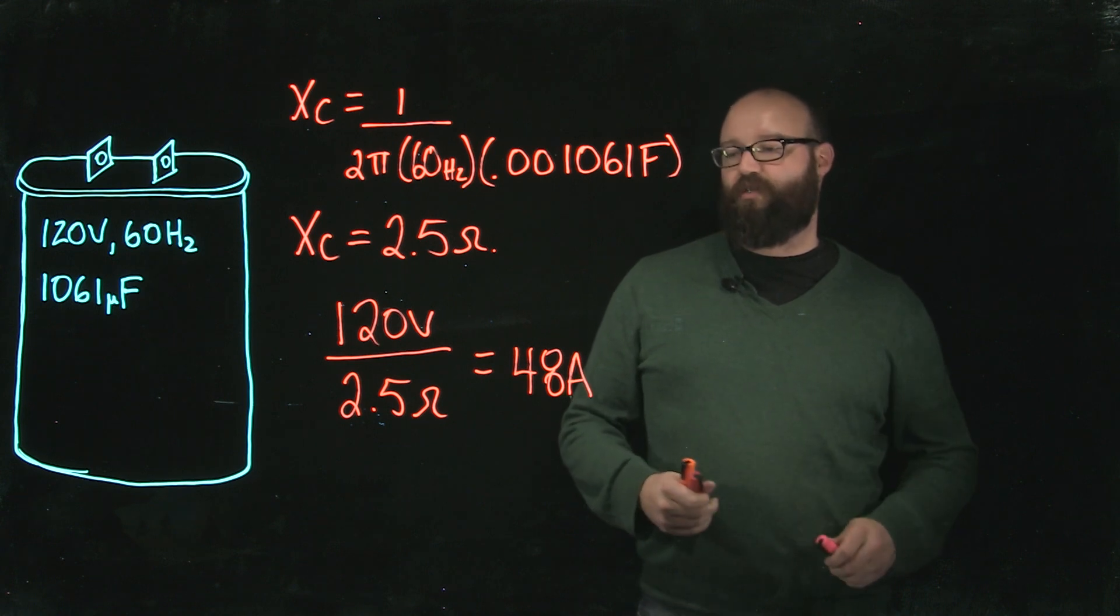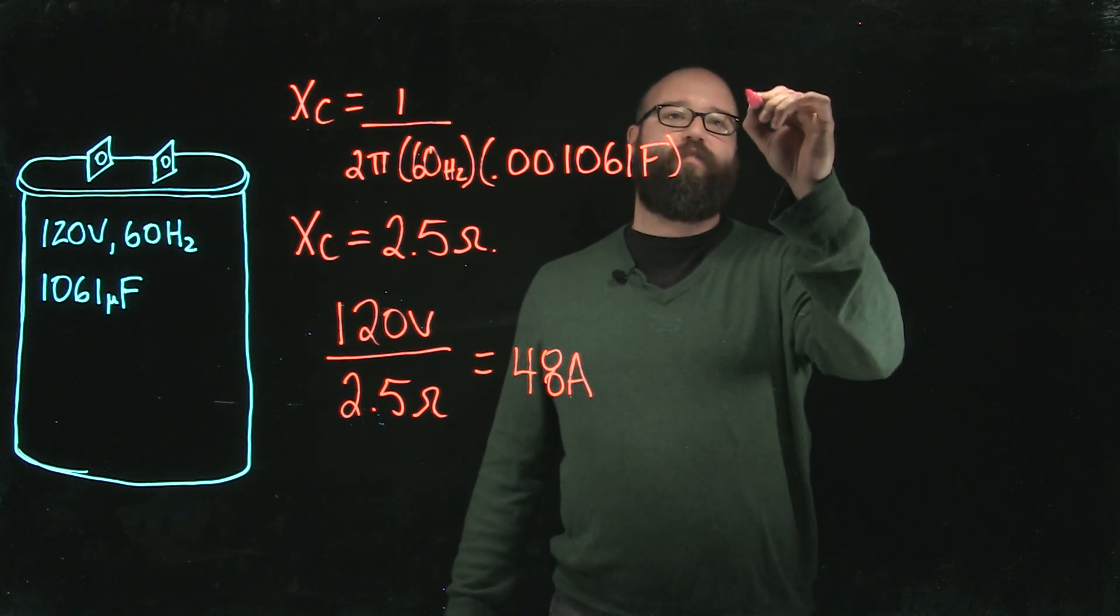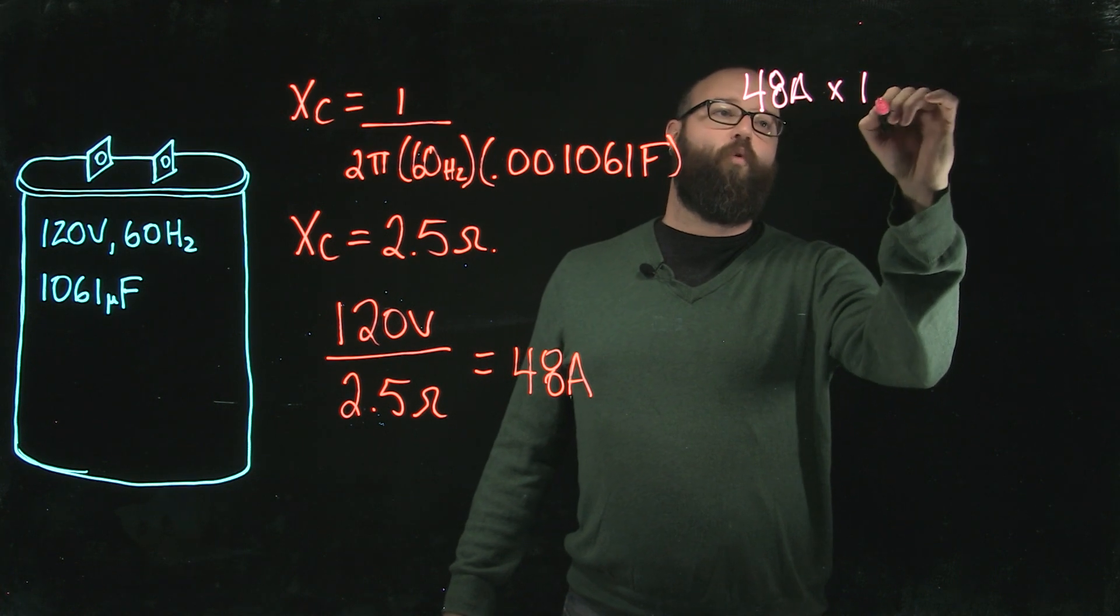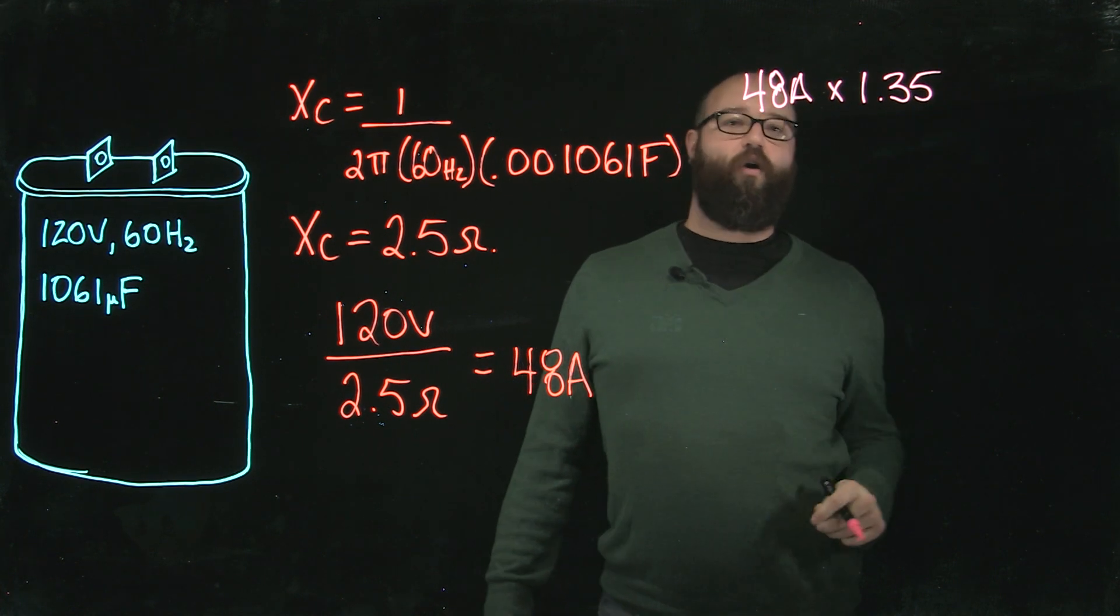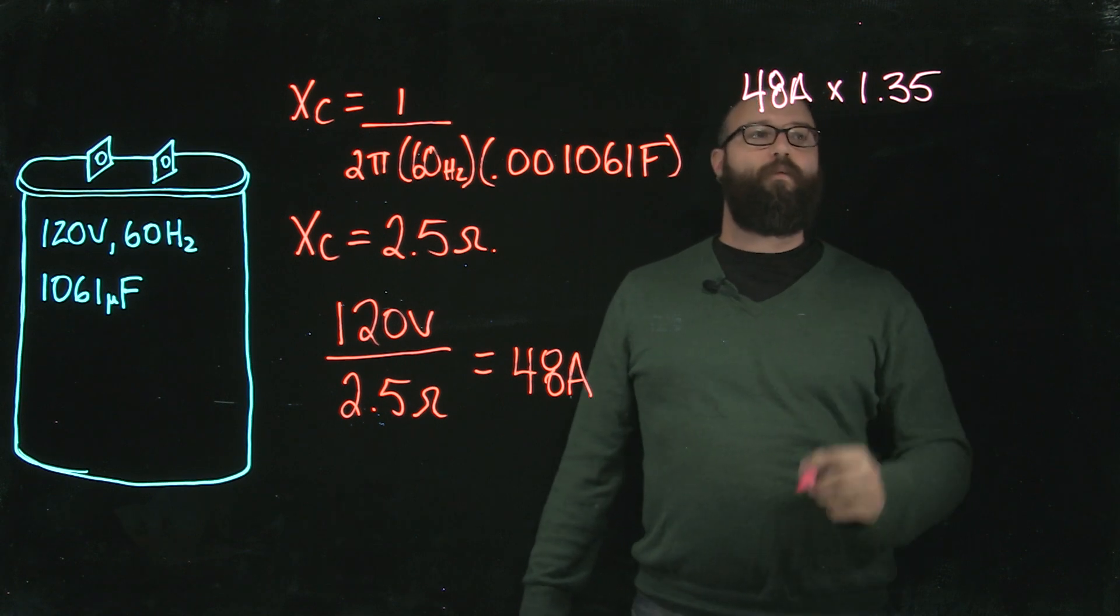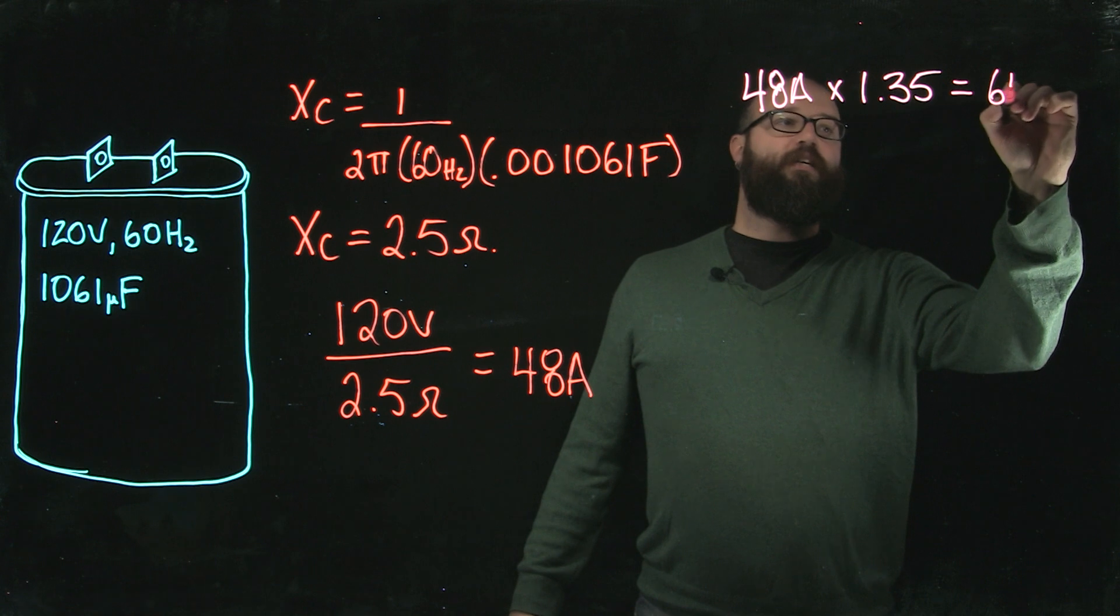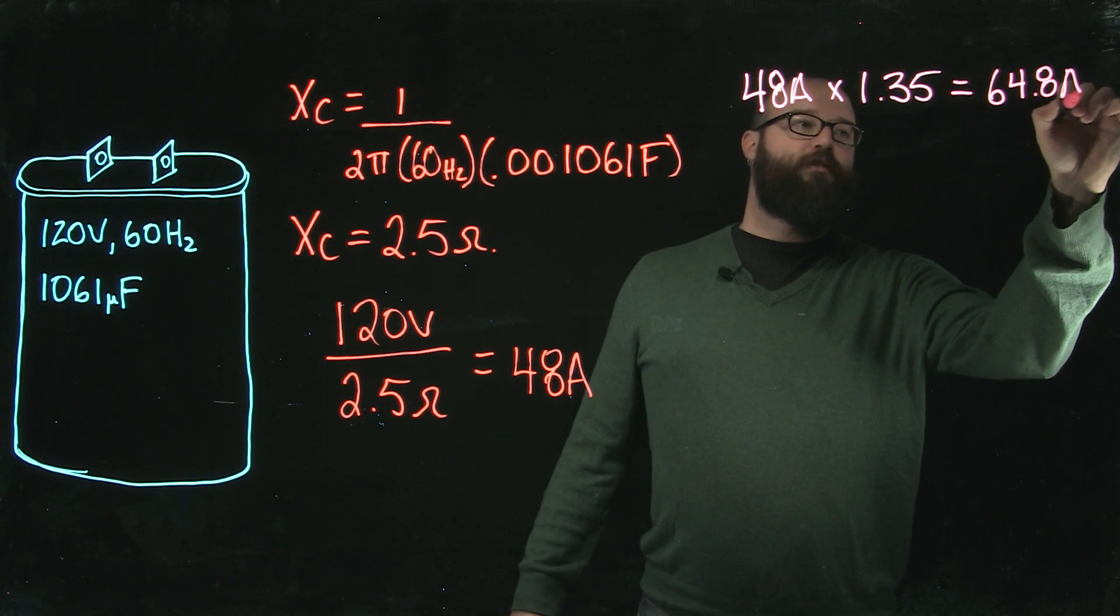So let's apply that 135%. We take the rated current of our capacitor which is 48 amps times 1.35 which is our 135% expressed in a decimal form. We should end up with a minimum ampacity of 64.8 amps.